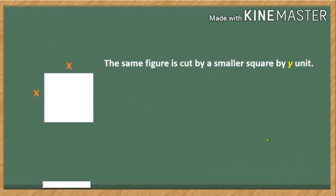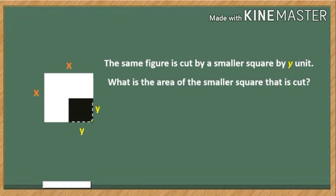Same figure is cut by a smaller square by y unit. So again, a smaller square with y unit is cut along this corner. And what is the area of the smaller square that is cut? We have again, area is equal to the square of its side, and its side is y, so therefore the area is y squared or y².